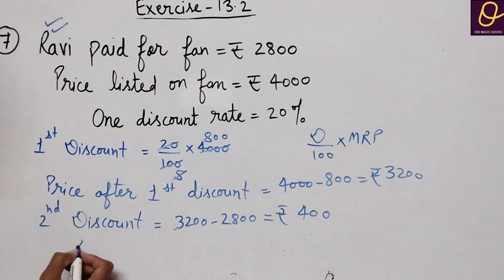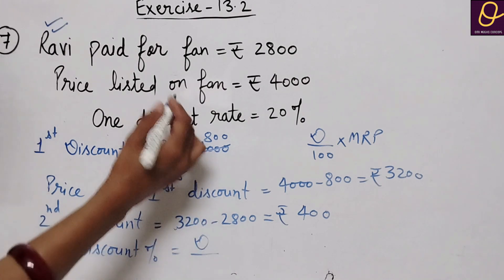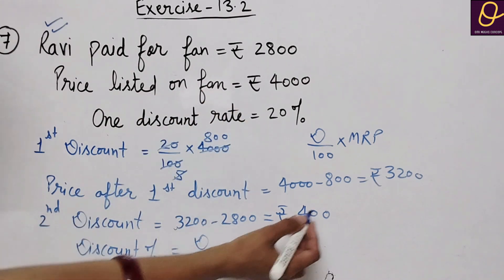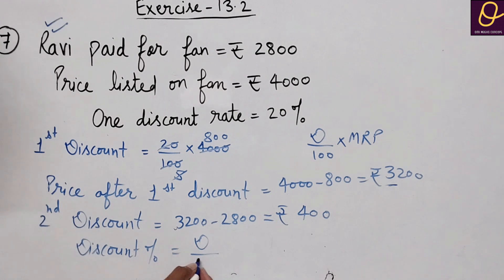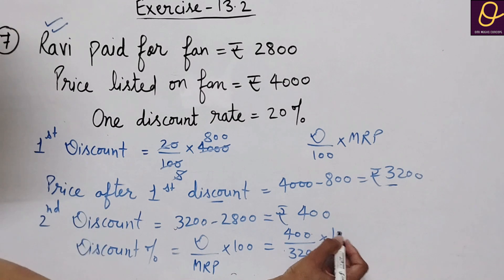Four hundred rupees discount we got. Now we need to find the rate. For rate, discount percent is equal to discount divided by the price.